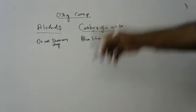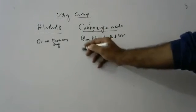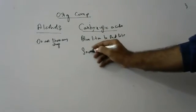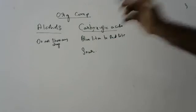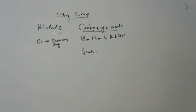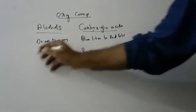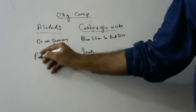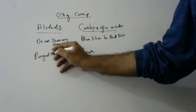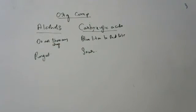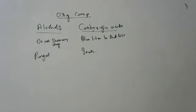Number two: if you taste carboxylic acids, because they are acids, they are sour. Whereas alcohols are a little bit pungent. But alcohols are not bases — alcohols are not bases, they are just pungent.